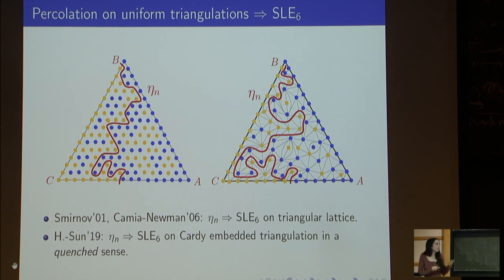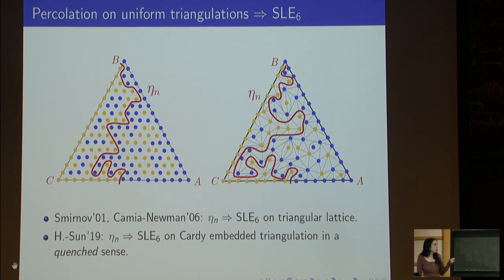There is also an annealed version of the result proved earlier by Gwynne and Miller, where they didn't consider an embedding but instead viewed the curve on an abstract metric space with the Gromov-Hausdorff topology.